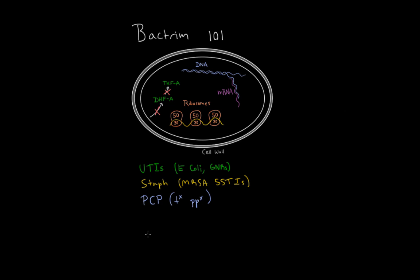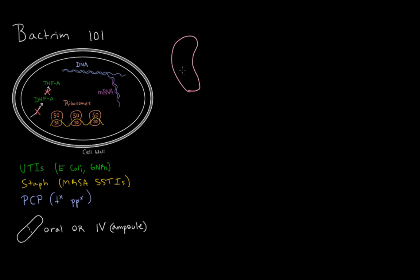Let's talk about formulations. Most people are going to take Bactrim as an oral tab — a white tablet with a little divot down the side. But it does come in IV as well; in that case you'll get an ampule. Now here's a question: if a patient's kidneys are not working too well, do you need to change the Bactrim dose? The answer is yes — Bactrim needs to be renally dosed.